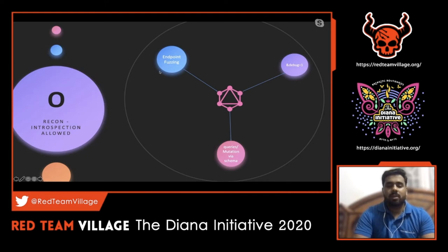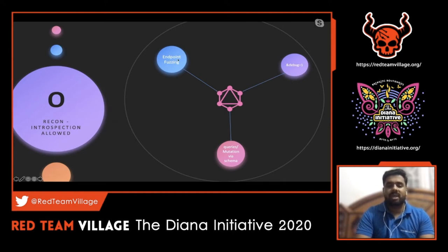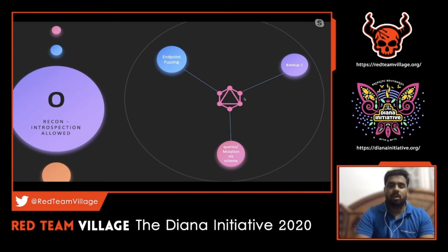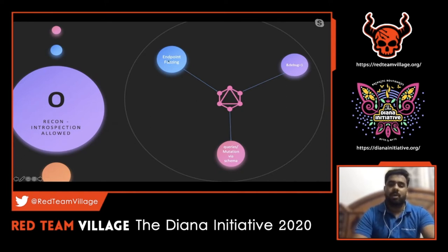There are three cases to check when introspection is allowed. Endpoint fuzzing is common - similar to REST APIs using checklists or FuzzDB. Check for endpoints like slash GraphQL or slash GraphIQL, though developers may rename or relocate them. When the GraphIQL interface is accessible, run the introspection query to pull out all queries, mutations, and subscriptions.